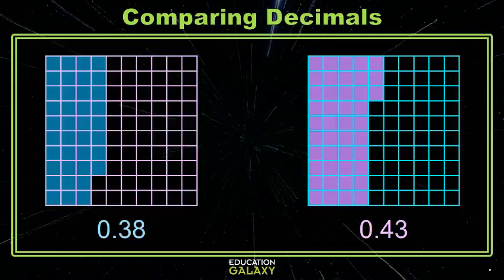How about these two? They're both separated into 100 equal sized pieces, so each little square is one hundredth of the whole grid. The one on the left has 38 of those pieces shaded, and the one on the right has 43 of those pieces shaded.